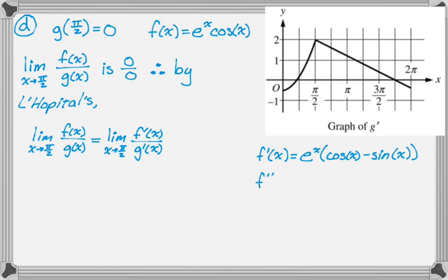So I can find f prime of pi over 2, which is going to be e to the pi over 2. Cosine of pi over 2 is 0. Sine of pi over 2 is 1, so we get negative e to the pi over 2. And then we're given the graph of g prime. So if we go to pi over 2 there, we can see that g prime of pi over 2 is 2.